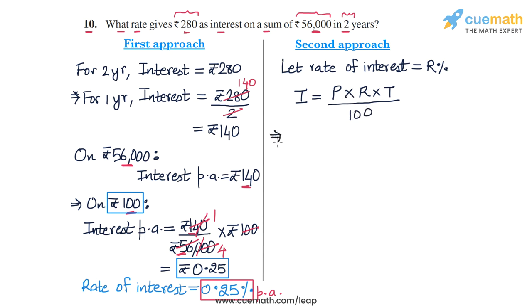So if you plug in the values that we have, the interest is given as ₹280. The principal amount P is given as ₹56,000. Let's not write the symbols here so that the equation is concise. 56,000 into the rate of interest is what we have to calculate. The time period is two years. And then we divide this by 100.